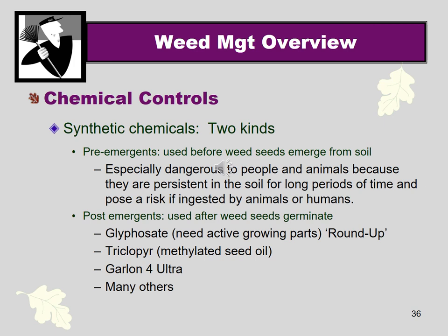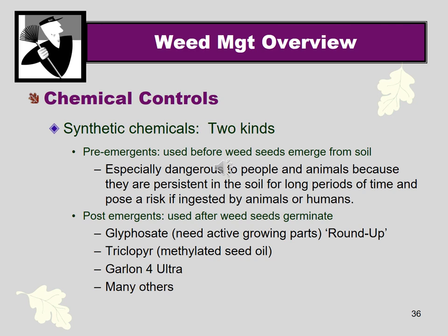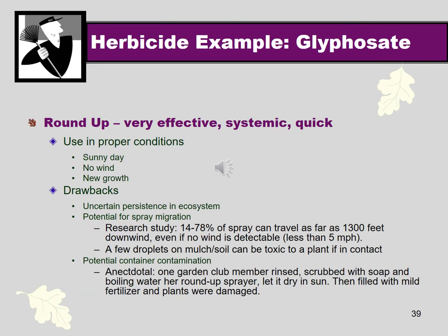Of synthetic chemicals, there are two kinds. There are pre-emergent ones sprayed before the weed seeds emerge from the soil, and there are post-emergent ones. Pre-emergent herbicides are especially dangerous to people and animals because they persist in the soil for a long time, waiting until seeds germinate — so there's greater risk they could be contacted or ingested by living organisms. Post-emergent products like Roundup are sprayed on weeds after they are growing. There are examples of both pre-emergent and post-emergent herbicides to be aware of.